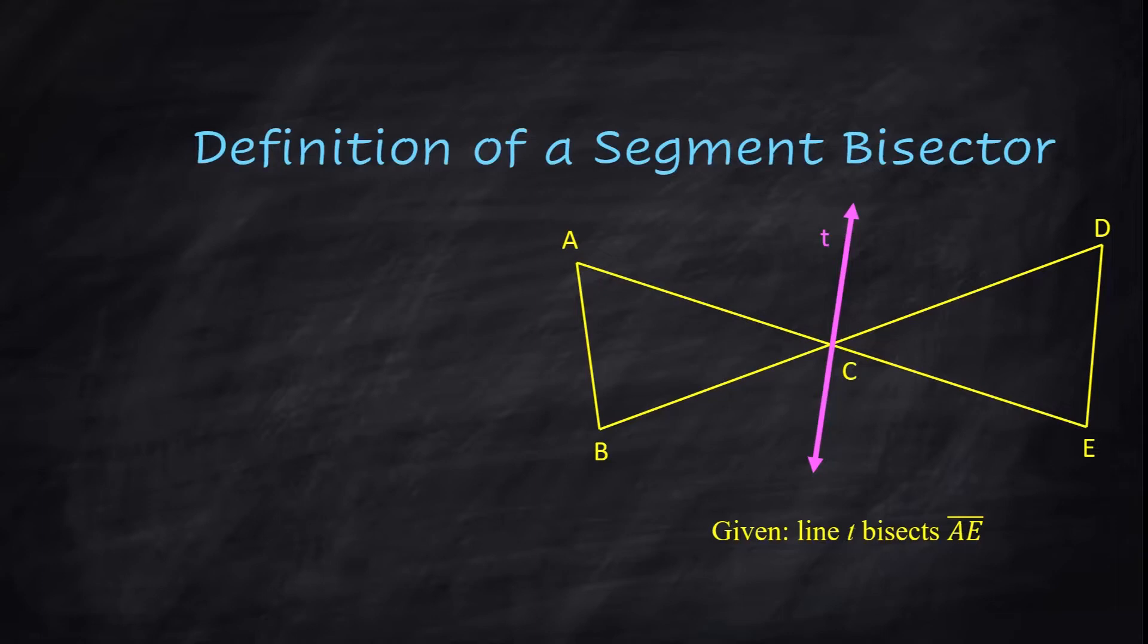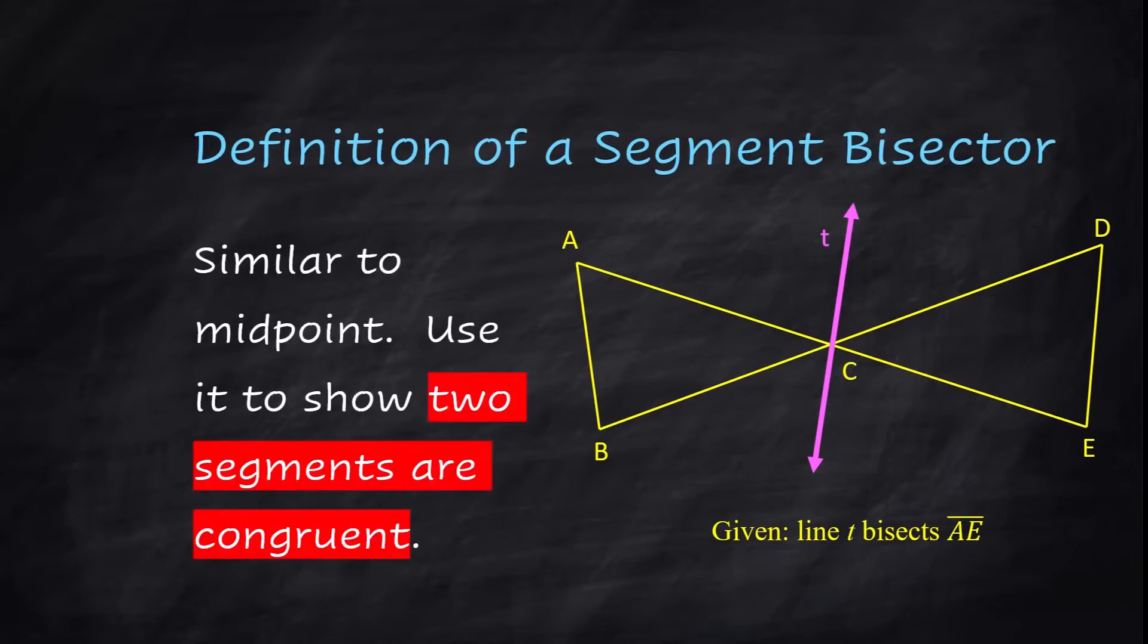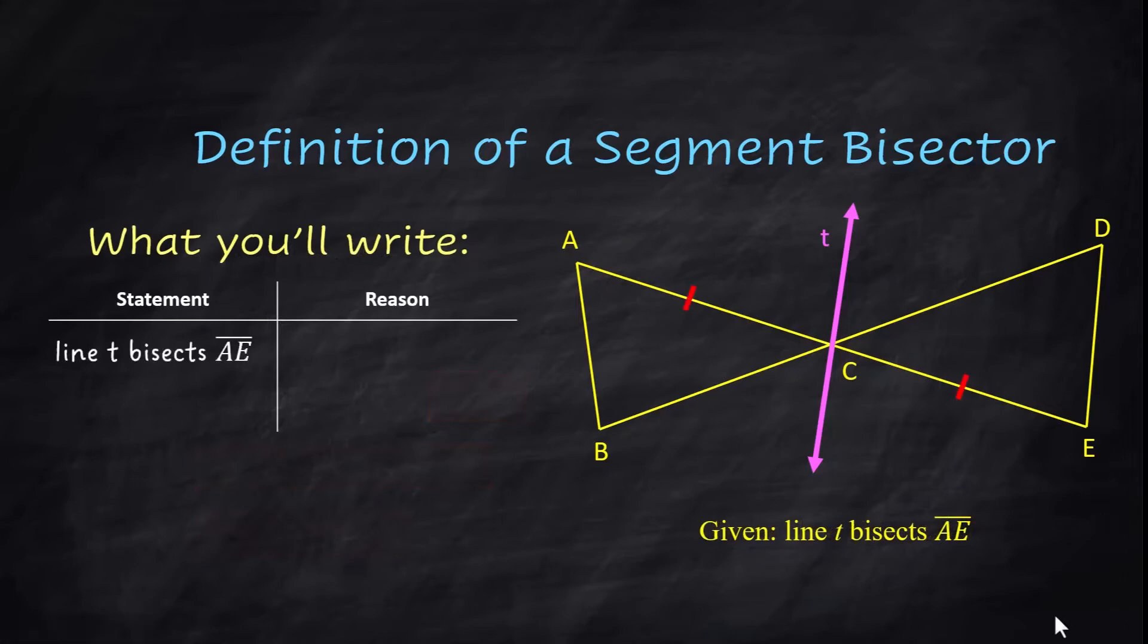We're going to use that in a proof. And the reason we want to use it is because if you have a segment bisector, it's kind of like a midpoint. You're going to end up with two congruent segments there and there. In a proof, line T bisects AE. The reason is given. AC is congruent to EC. And that's the definition of bisector.